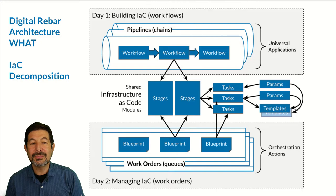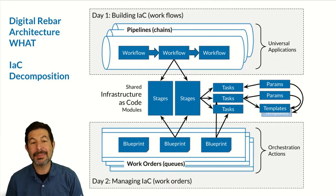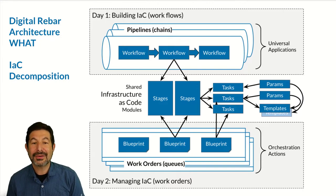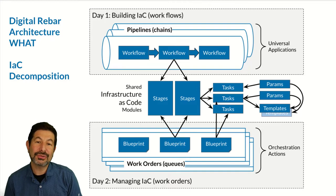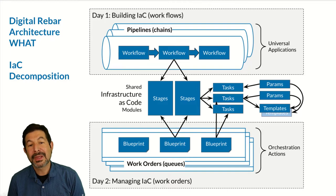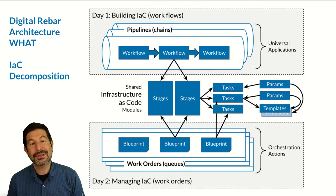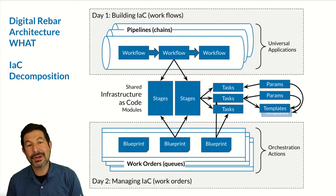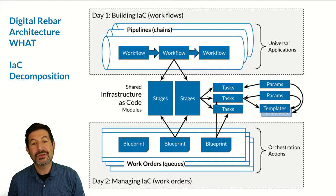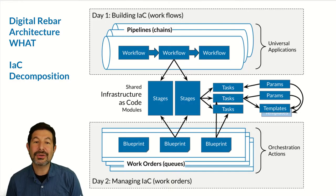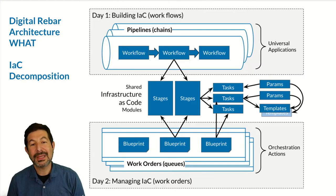The first thing to understand is that the infrastructure as code — the what — is broken down into different components. For the pipelining piece, we do the building workflows as workflows. Those get tied together into pipelines, and pipelines are represented in Digital Rebar as universal applications, meaning reusable chains of workflows. The workflows decompose into stages, tasks, parameters, and templates in an ordered way, and you can mix and match. On the other side for day two, we use the language blueprint to describe what the systems are doing. Blueprints help us build work orders in a stable way, and those get tied back into our orchestration actions — things like triggers and trigger providers that allow us to define orchestration behaviors in an infrastructure as code way.